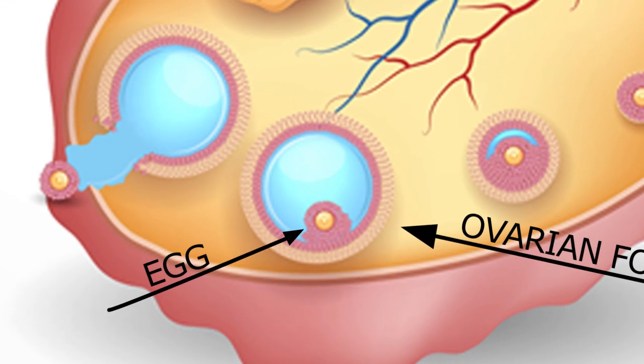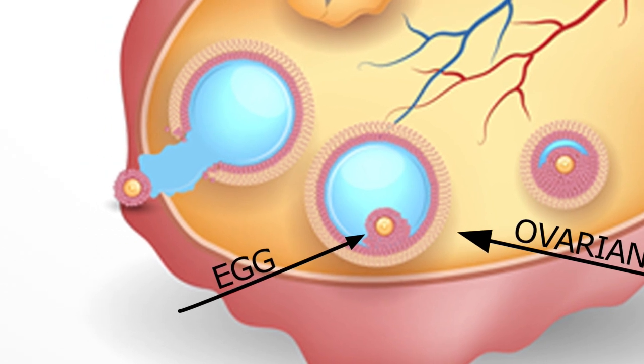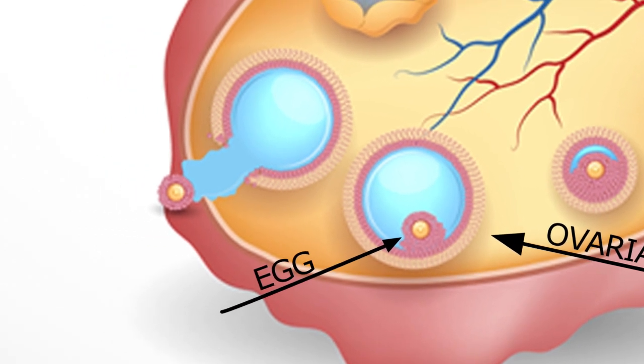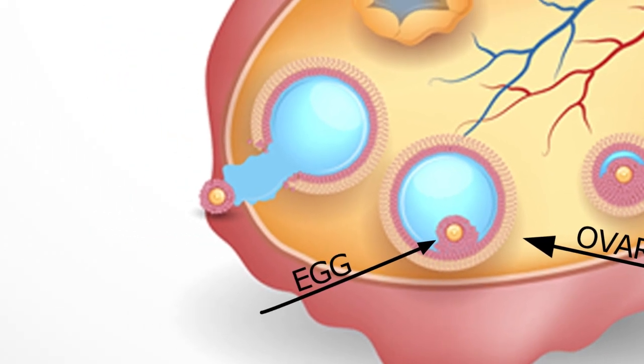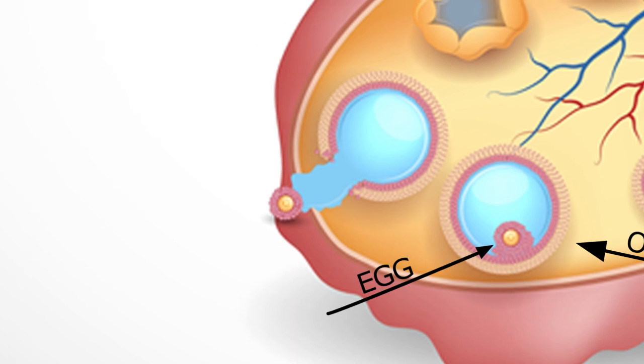These follicles compete for dominance during the follicular phase, and usually only one ovum would be released on the day of ovulation at the end of the follicular phase. It is possible for more than one ovum to be released in the same 24-hour period of ovulation, and this may result in twins.